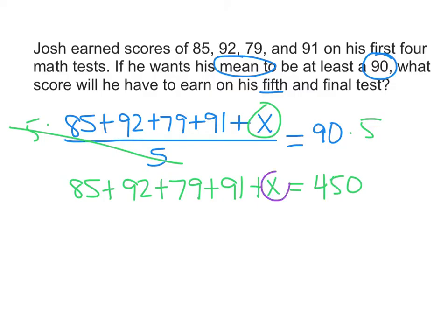And then again, to solve for X, we're going to combine these like terms. So we're going to add 85 plus 92 plus 79 plus 91. And we get 347 plus X equals 450.